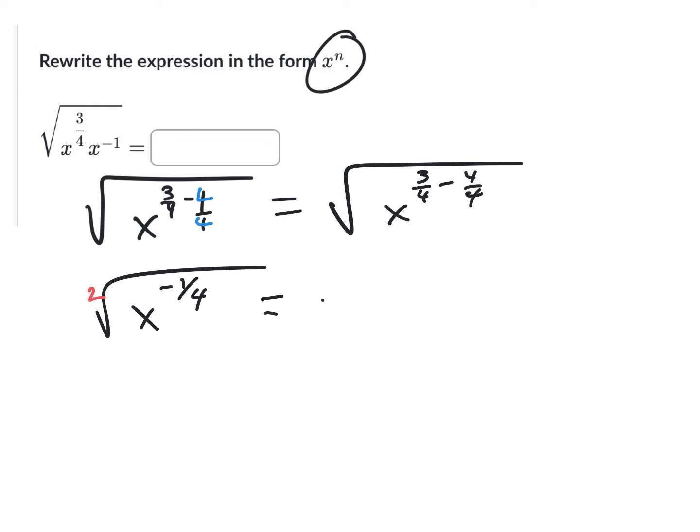That means I can rewrite this as x to the negative one-fourth, parentheses, one-half. Because there is no number out here, so you'd make that a one, make that a two. That's how you could rewrite your exponent.